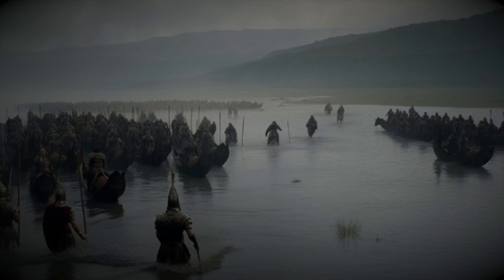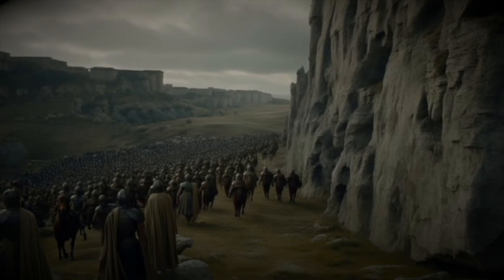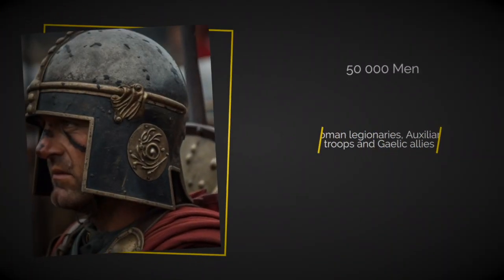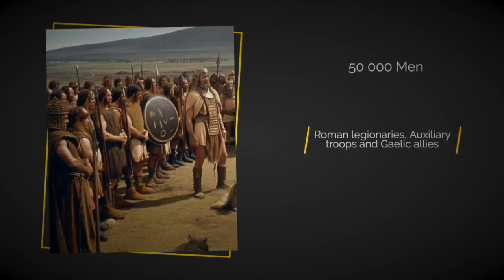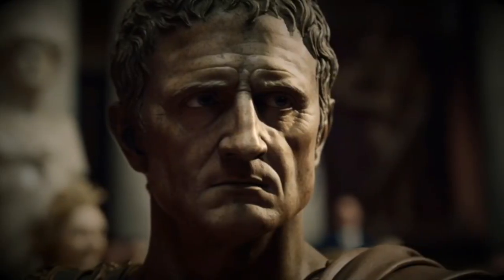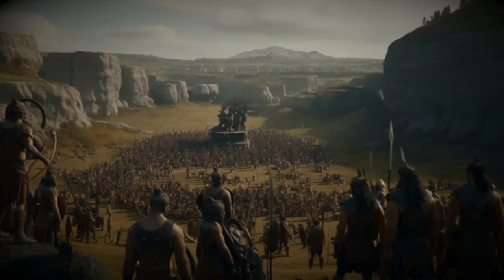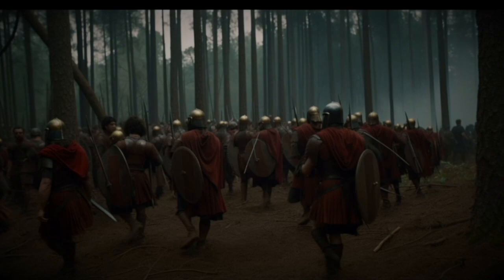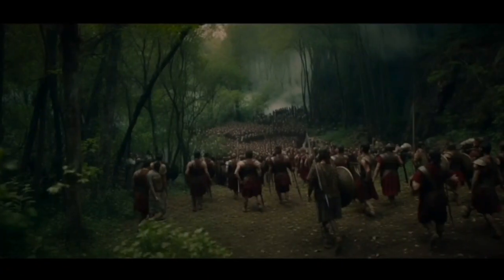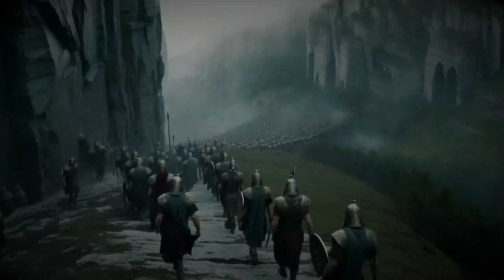Caesar assembled a force of over 50,000 men, including Roman legionaries, auxiliary troops, and Gallic allies. Despite his impressive force, he was not invincible. He faced several setbacks and defeats in his early campaigns, including a humiliating defeat at the hands of the Nervii, one of the most powerful and warlike tribes in Gaul. Despite this setback, Caesar remained undeterred, continuing to push forward using his knowledge of terrain and mastery of strategy to outmaneuver and defeat his enemies.